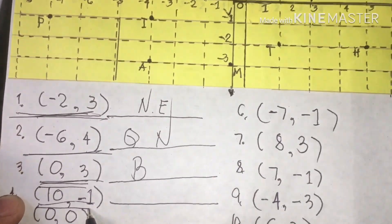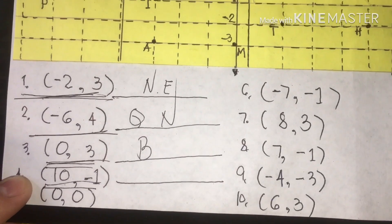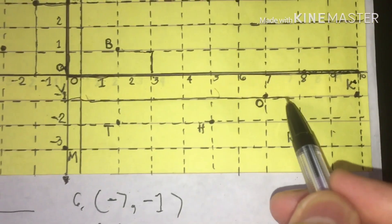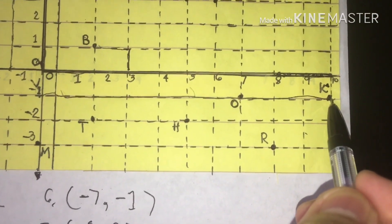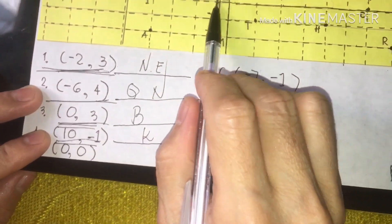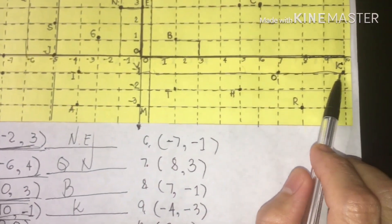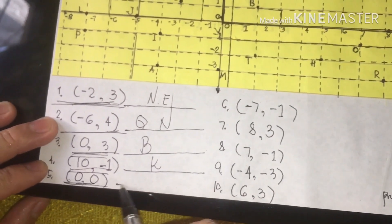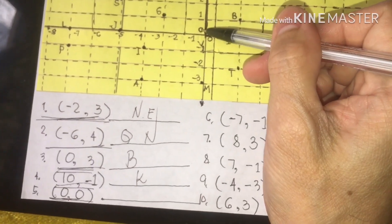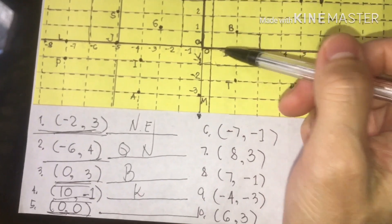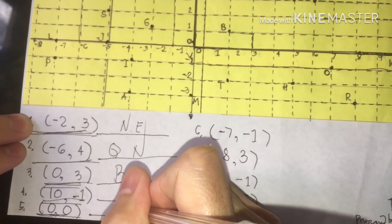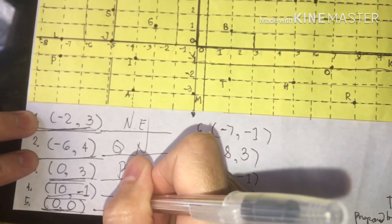Next, positive ten and negative one. We have negative one going to positive ten — that point is labeled K. Next is number five: zero and zero. All we have to do is locate positive zero and negative zero — there is no name for the given points here; this is what we call the origin, which is zero.